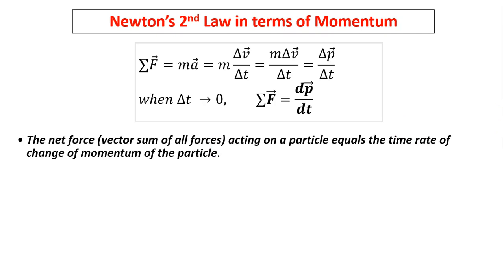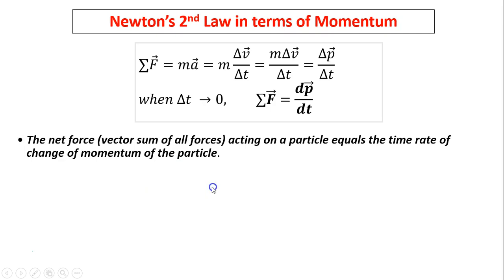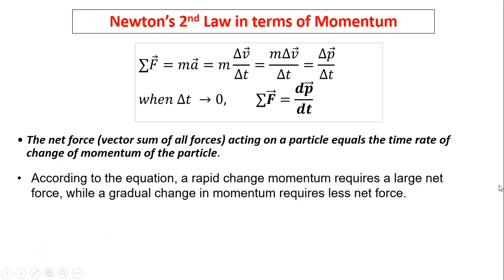Newton's second law in terms of momentum: the sum of forces equals m times a. Since a is change in velocity divided by change in time, m times a gives the change in momentum. So the sum of forces equals change in momentum over change in time. When delta t approaches zero, net force equals dp over dt — the derivative of momentum with respect to time. A rapid change in momentum requires a large net force, while a gradual change requires less net force.